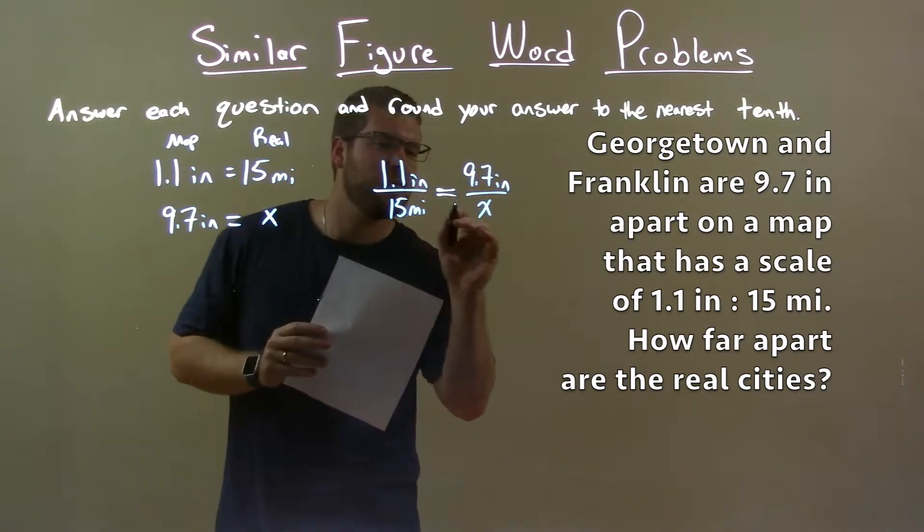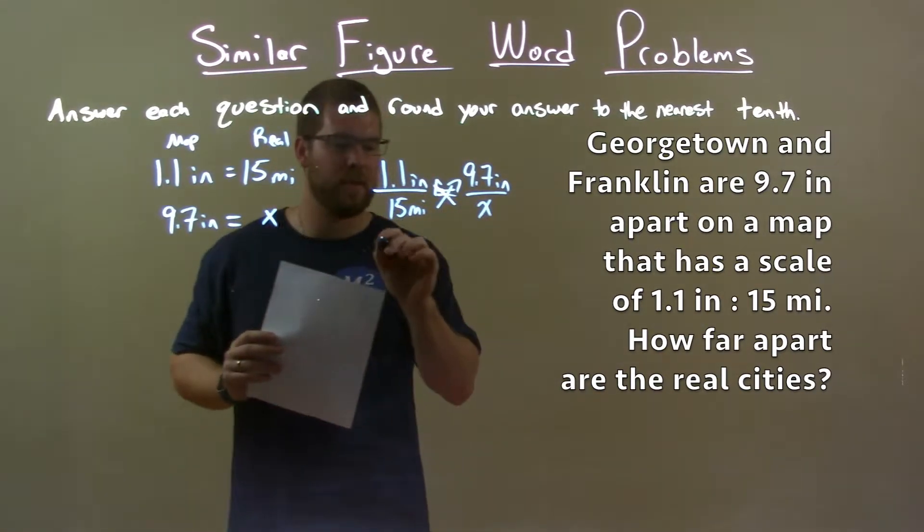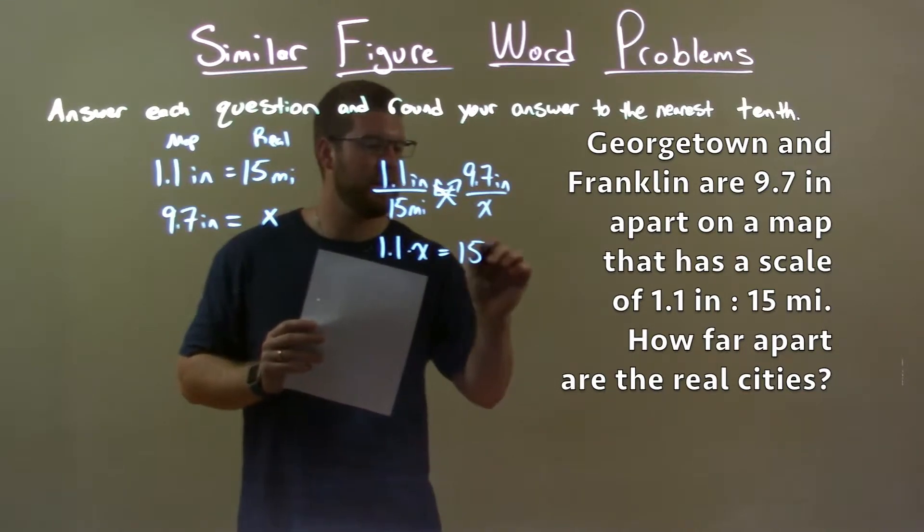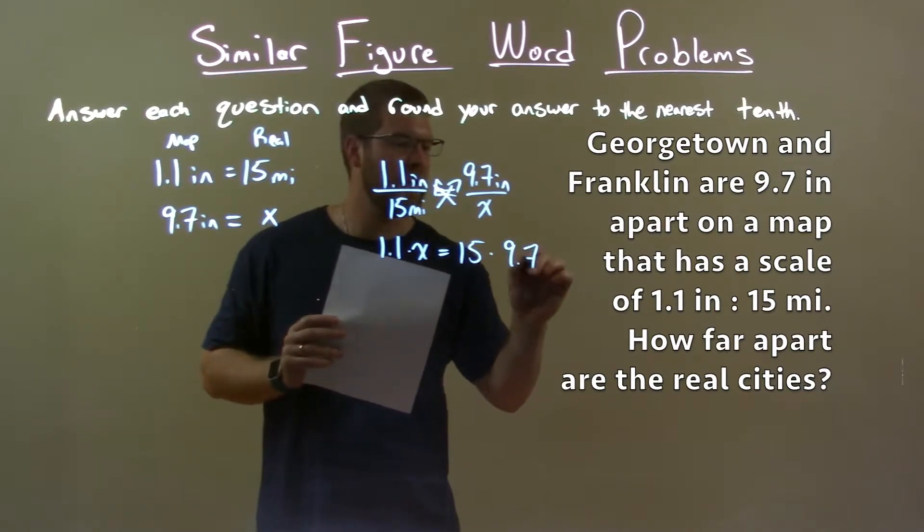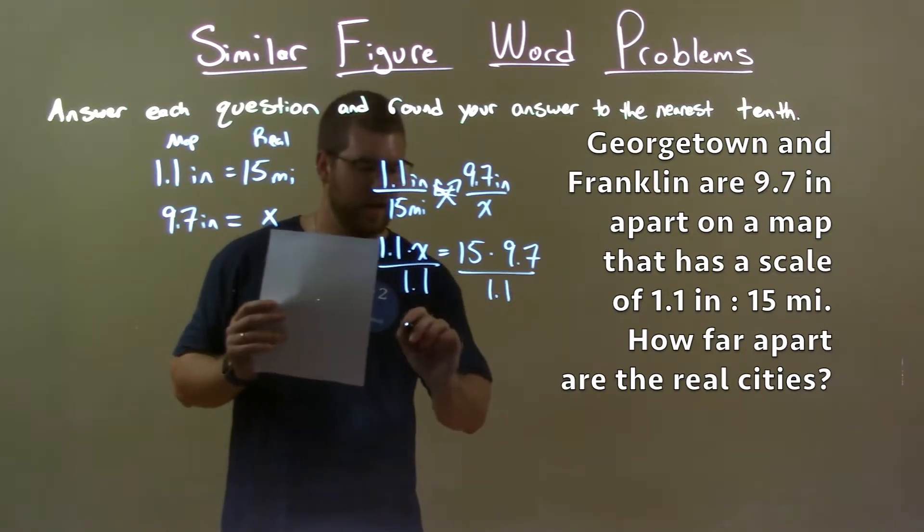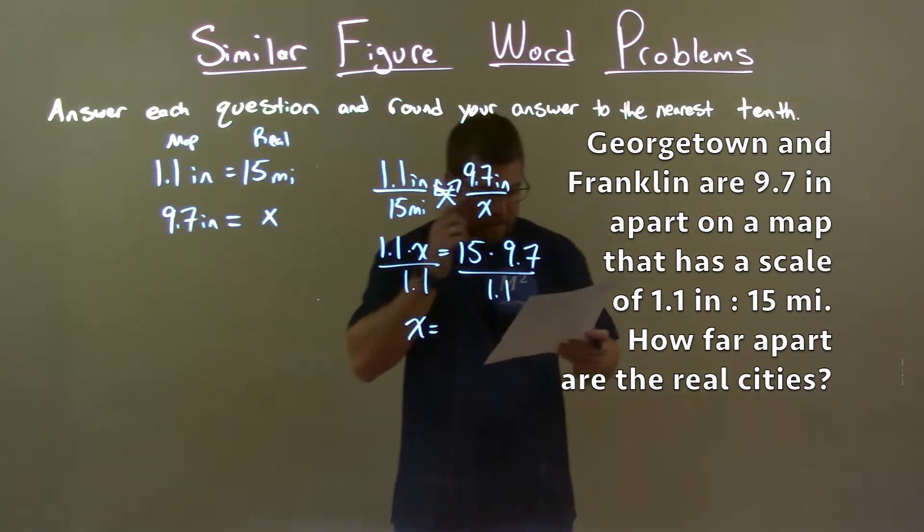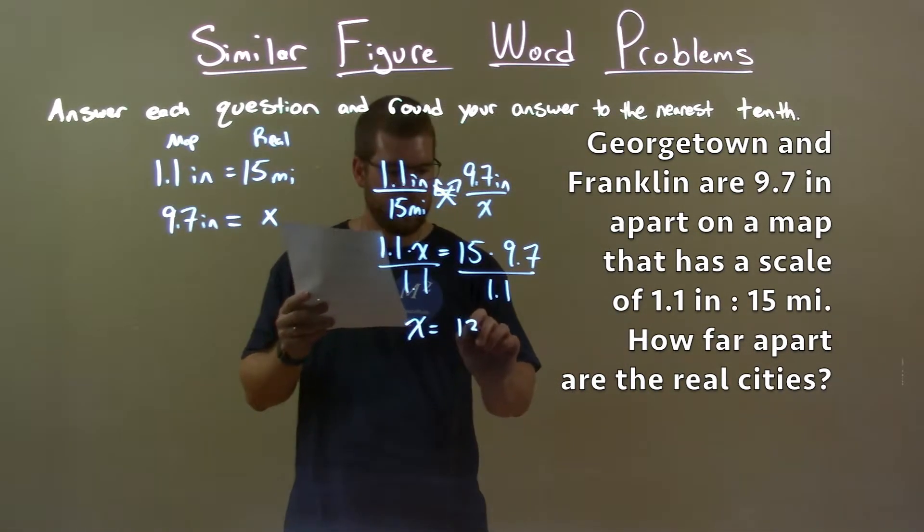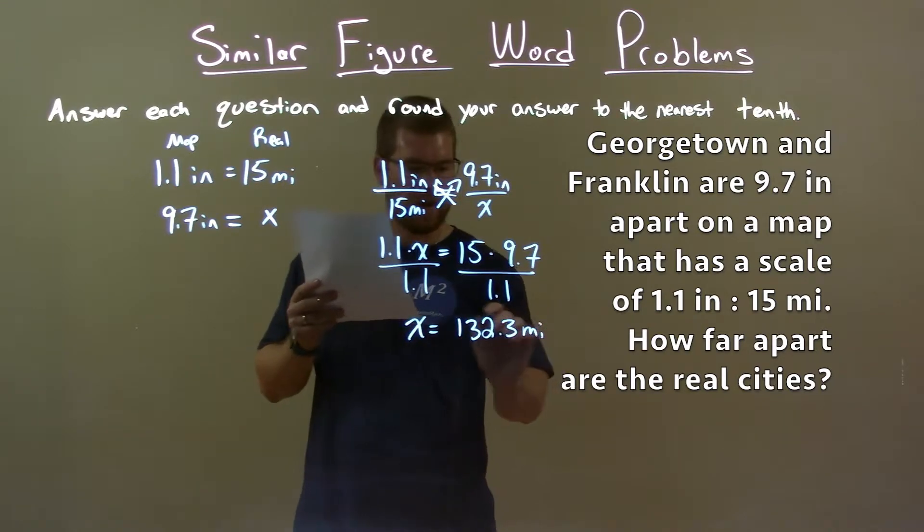To solve this, we have to cross-multiply. 1.1 times x is equal to 15 times 9.7. Divide both sides by 1.1. We got x by itself, and 15 times 9.7 divided by 1.1 is 132.3 miles.